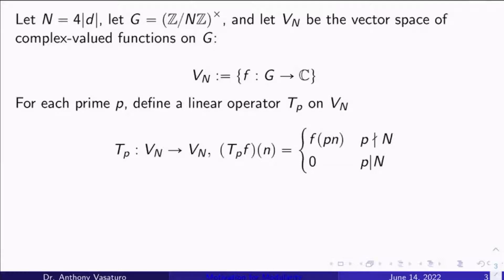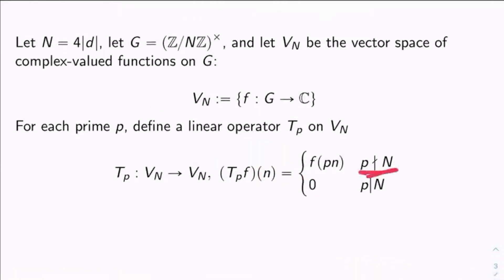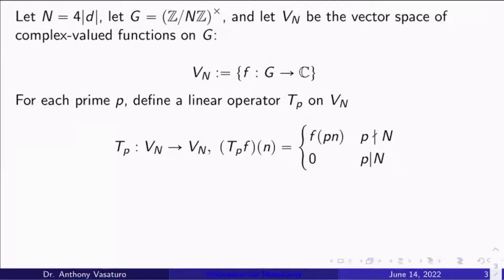Well, I'll tell you what that function is by telling you what it does at each n in G. So T_p(f) evaluated at n will just be f(p*n), so we'll scale the argument by p, if p doesn't divide N, and it will be zero otherwise. So it'll be zero if p does divide N.